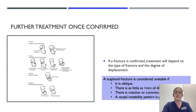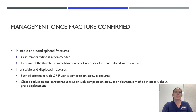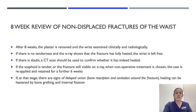If a fracture is confirmed, treatment depends on the type and degree of displacement. A scaphoid fracture is considered unstable if it is oblique, there is as little as one millimetre of displacement, there is rotational comminution, or there is a carpal instability pattern present. In stable and non-displaced fractures, cast immobilisation is recommended, and inclusion of the thumb is not necessary for non-displaced waist fractures. In unstable and displaced fractures, surgical treatment with open reduction internal fixation with a compression screw is required. Closed reduction and percutaneous fixation with a compression screw is an alternate method in cases without gross displacement.